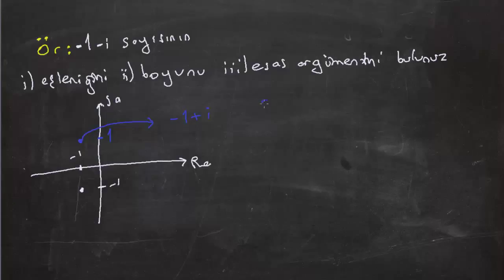O zaman eşleniği aslında z eşlenik eşittir eksi 1 artı i. Peki şimdi bu sayının boyunu bulmaya geçelim. Şimdi bu sayının boyu eksi 1'in karesi artı eksi 1'in karesi kök içerisinde. Bu da kök 2 gelecek.